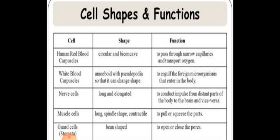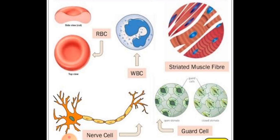Guard cells, found in plants at the stomata, are bean-shaped because they have to open and close the pores. These pores open and close depending on the turgidity of water. So you have seen the various shapes and their functions, and you can correlate these with the help of a diagram.